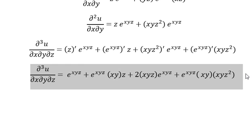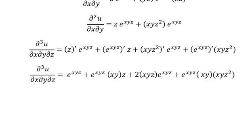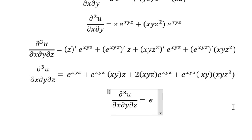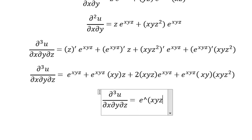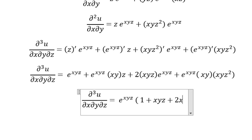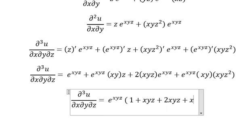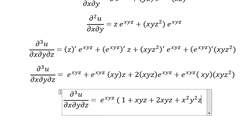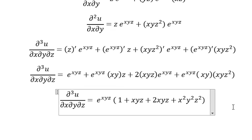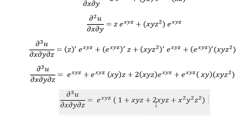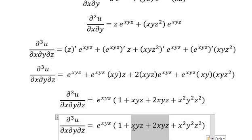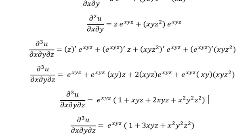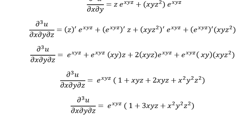Now we can do factorization. We factor out e to the power of xyz and collect the terms inside: 1 plus xyz plus 2xyz plus x square y square z square. Combining like terms gives us 3xyz, so we have e to the power of xyz times that expression. This is the final answer. Thank you for watching.